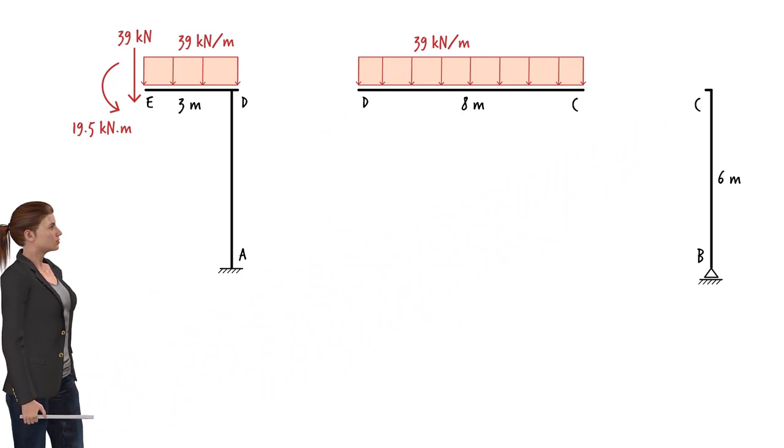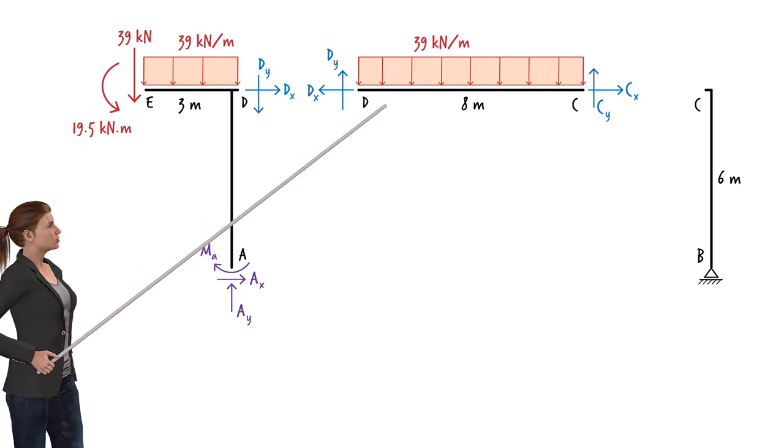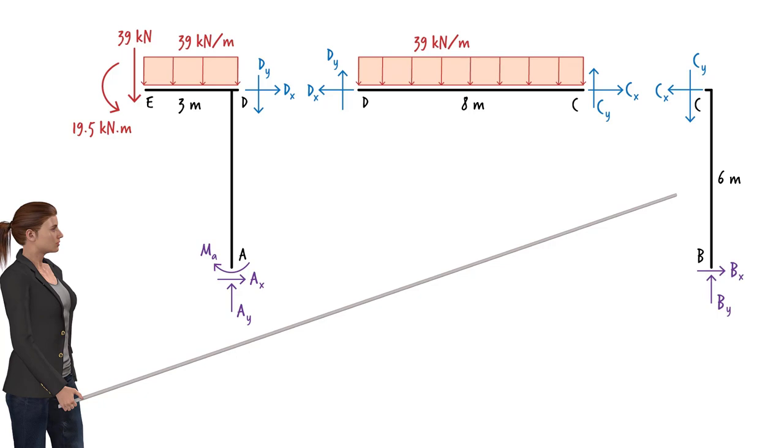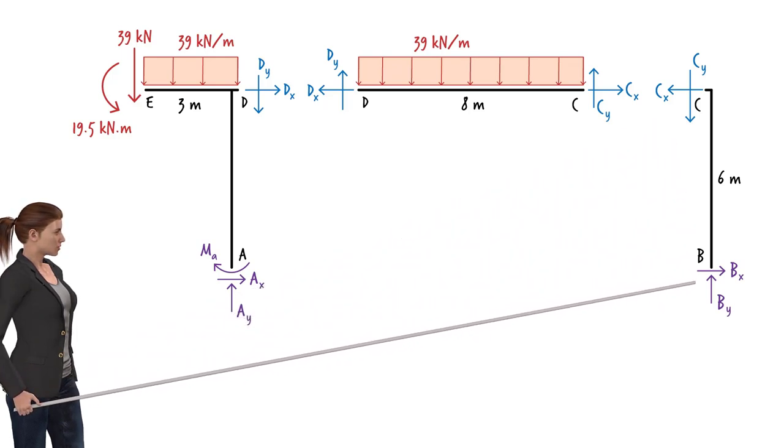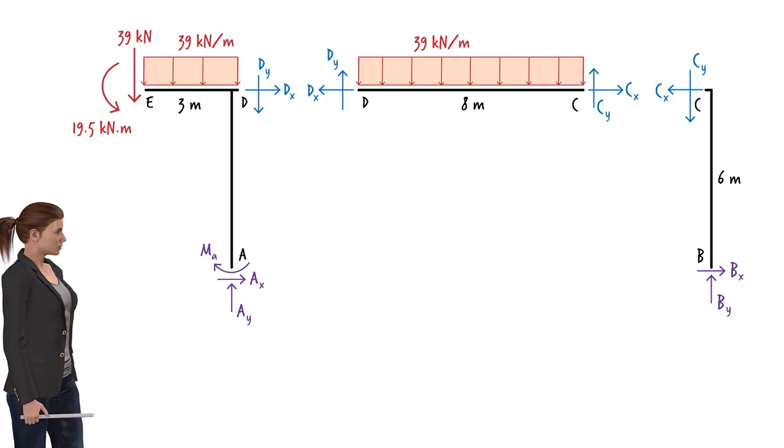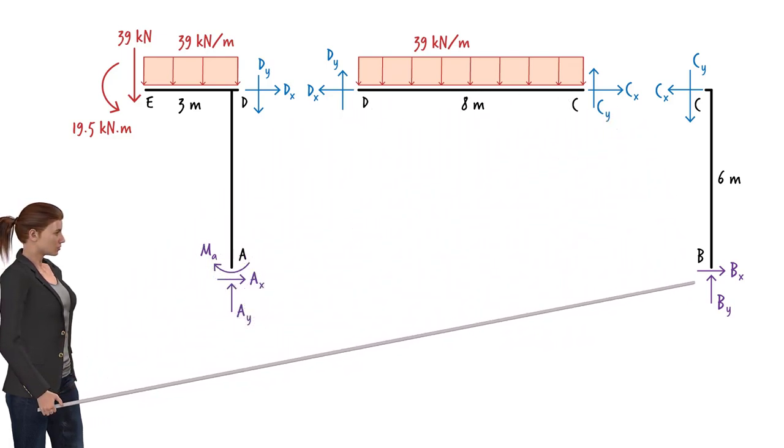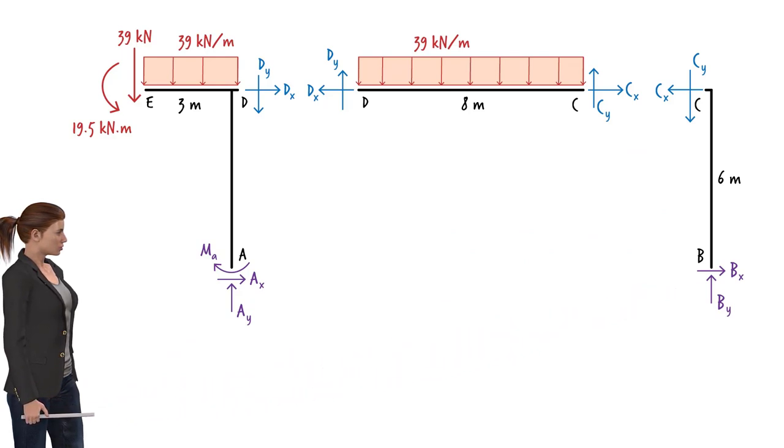For each frame segment, we can draw a free body diagram. This free body diagram embodies five unknown forces. There are three support reactions at A, and a shear force and an axial force at D. The free body diagram for the beam segment has four unknowns, an axial force and a shear force at each end. This free body diagram also has four unknowns. In addition to the axial force and the shear force here, we have the two reaction forces at the pin support at B. However, since these diagrams have several forces in common, we end up with a total of nine unknown forces. There are three unknowns at A, two unknowns at D, two unknowns at C, and two unknowns at B. Note that we can write three equilibrium equations for each free body diagram, resulting in a total of nine equations. So we can easily determine the unknown forces using the static equilibrium conditions.